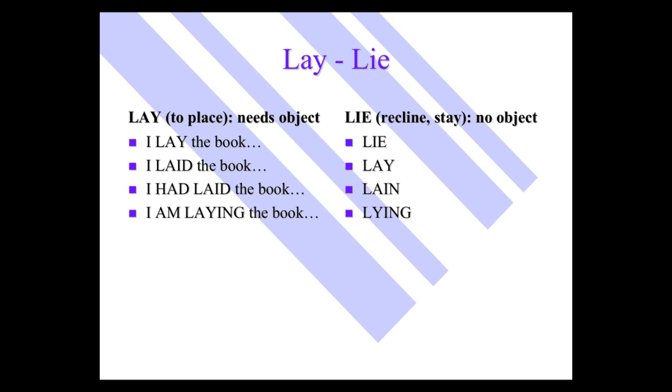Now, lie means to recline or to rest or to stay. It cannot take an object. So I lie down. Yesterday, I lay down. There's the past tense, and that's why this is so confusing. The past tense of lie is lay. I had laying down. I am lying down. The real easy trick to use here is, is there an object or is there not an object? If there is an object, it's lay or one of the conjugations of lay: laid, had laid, and lain. If it does not have an object, it's lie or one of the conjugations of lie.